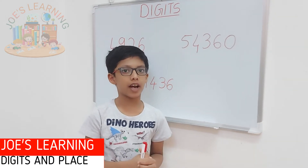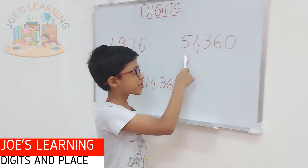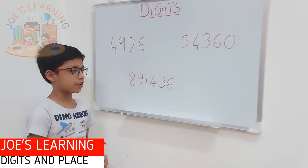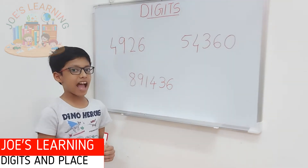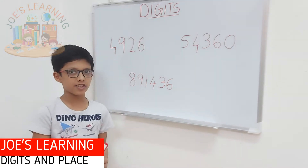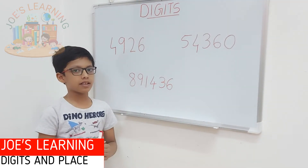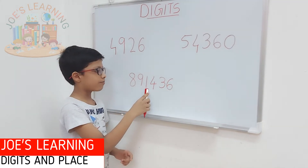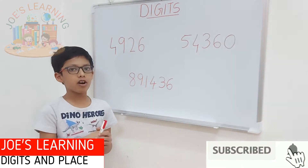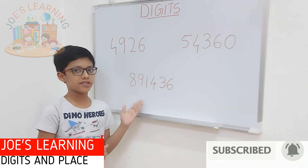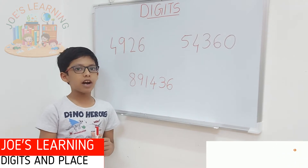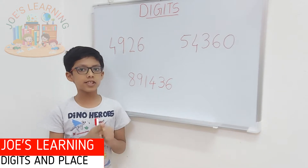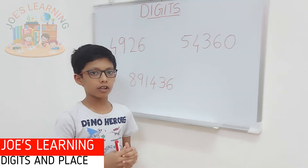And so, we can identify how many digits this number has. This is a 5-digit number because there are 5 digits in this number. Now we have understood that digits are the symbols used to write a number. So the symbols used to write a number are called digits.